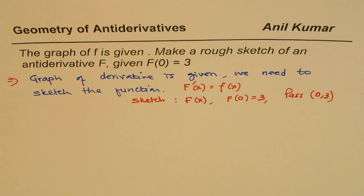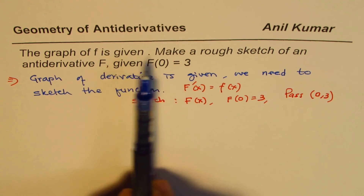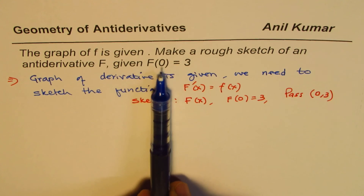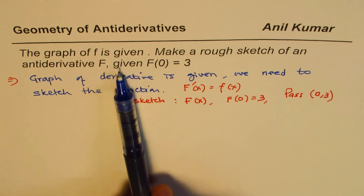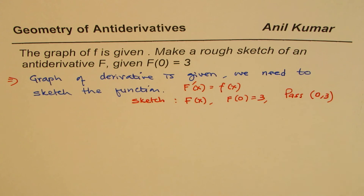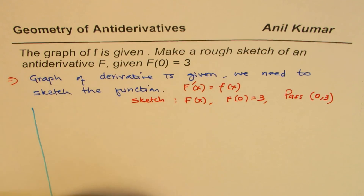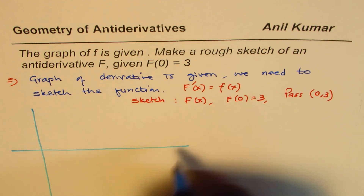The idea here is first to understand the question and then move about it, because I find students really getting confused with these statements. So to clarify: the graph of f is given, make a rough sketch of the anti-derivative F given F(0) = 3 — it really means you are given the graph of the derivative and you want the function.